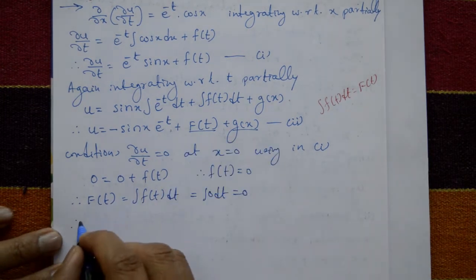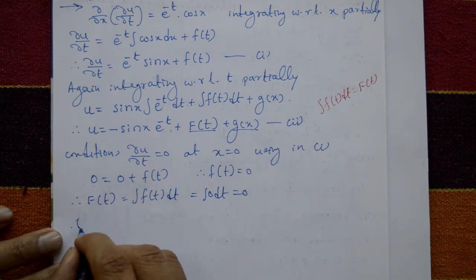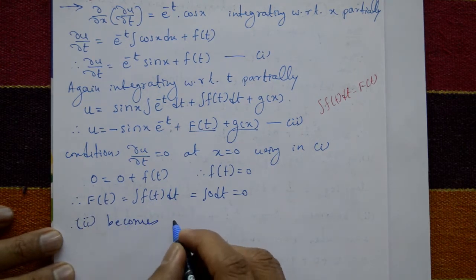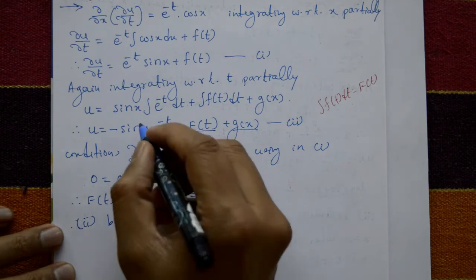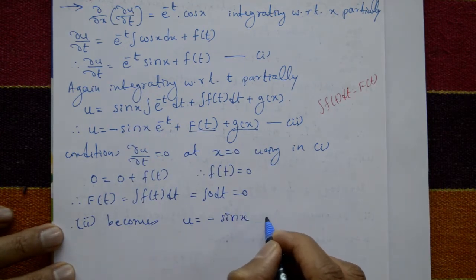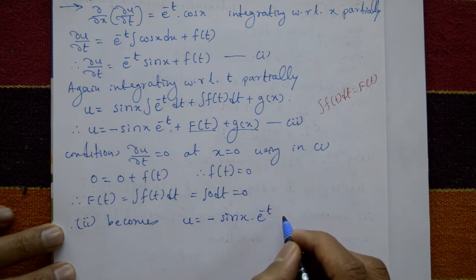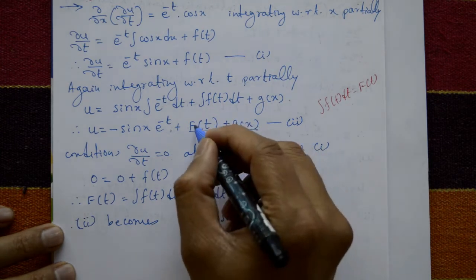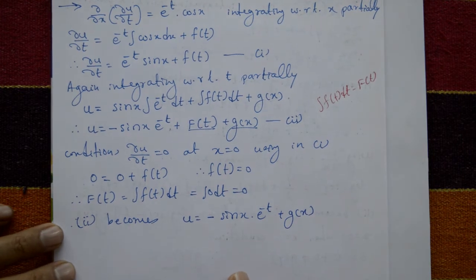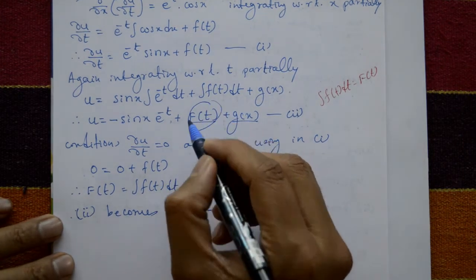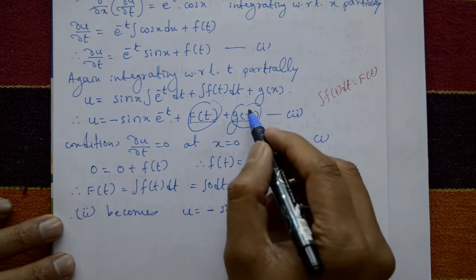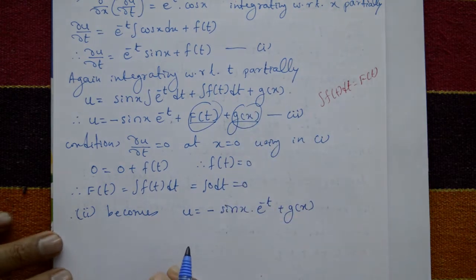Equation number 2 now becomes u = −sin(x)·e^(-t) + 0 + g(x), since F(t) = 0. We still need to find g(x).